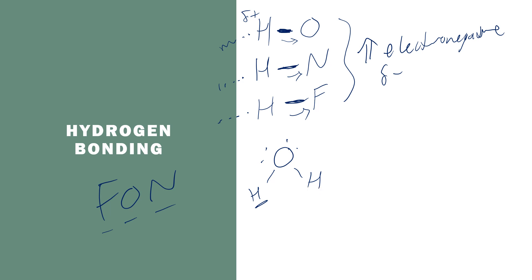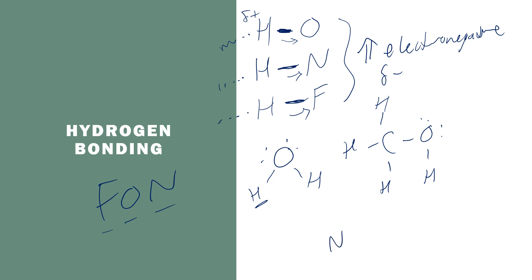Any time you have something with one of those FON bonds present, it can form hydrogen bonds with something else. Alcohols can form hydrogen bonds — like methanol, where this hydrogen can form hydrogen bonds with another compound. Another common one is ammonia, NH3 — those hydrogens can form hydrogen bonds. Hydrogen fluoride can form hydrogen bonds with other compounds and with each other. Basically, hydrogen bonding is just a much stronger dipole-dipole force because of the high electronegativity of oxygen, nitrogen, and fluorine. Hydrogen bonds tend to be the strongest, so they give higher boiling points and melting points — there's a stronger attraction, so it will be harder to break.